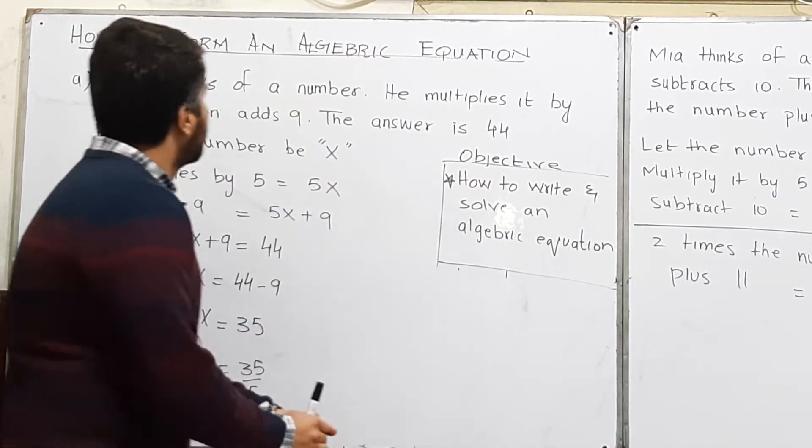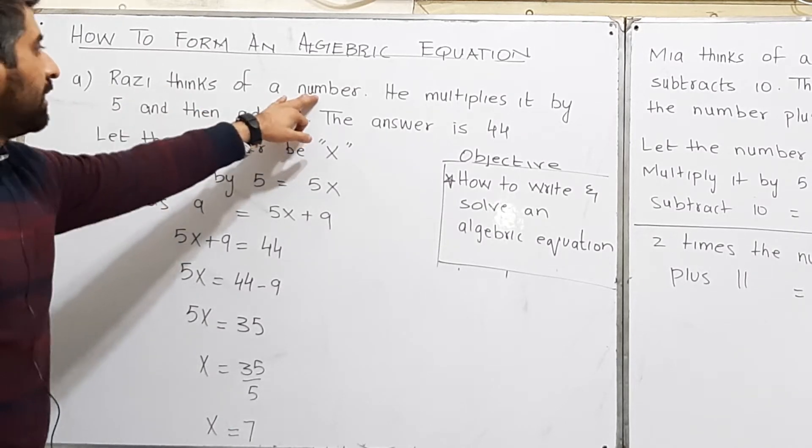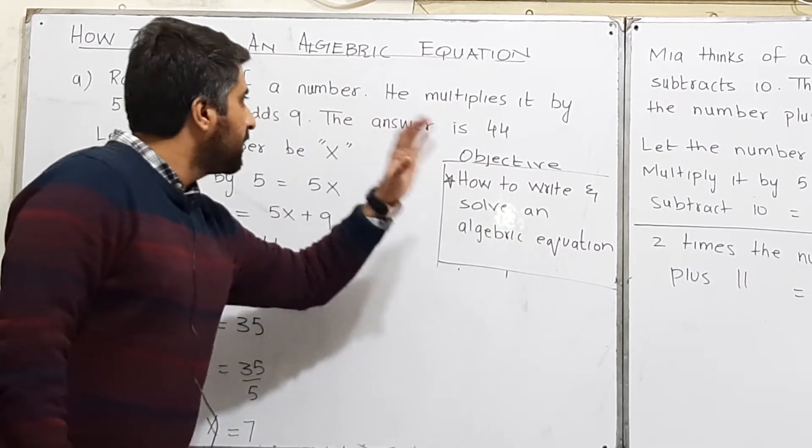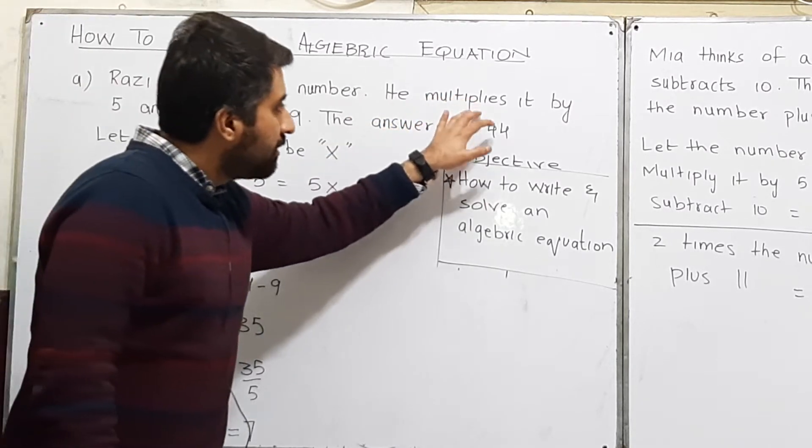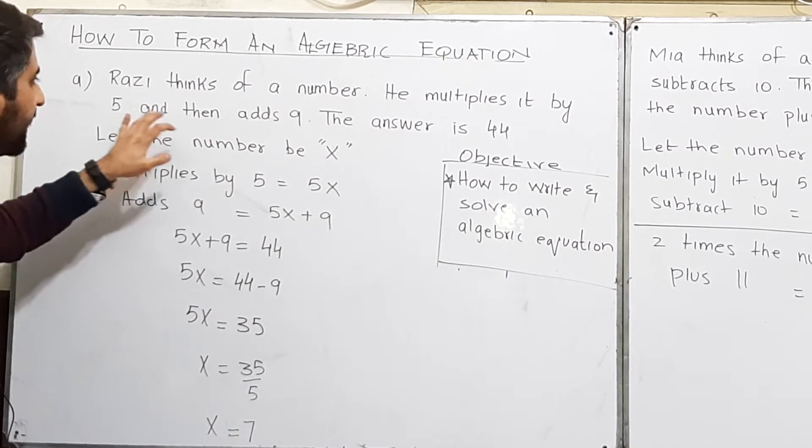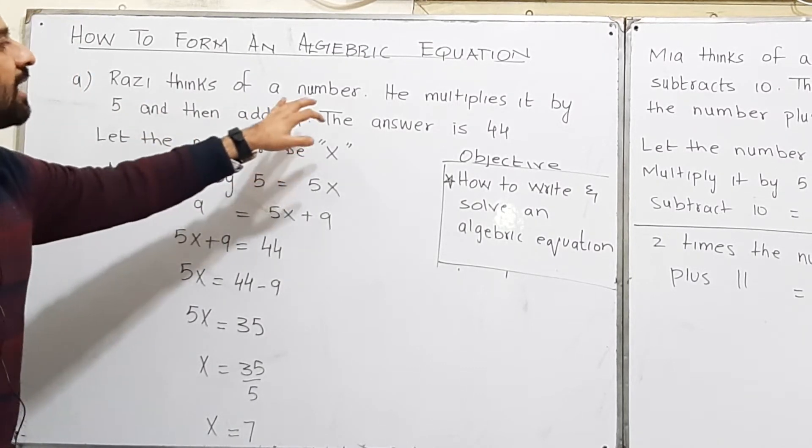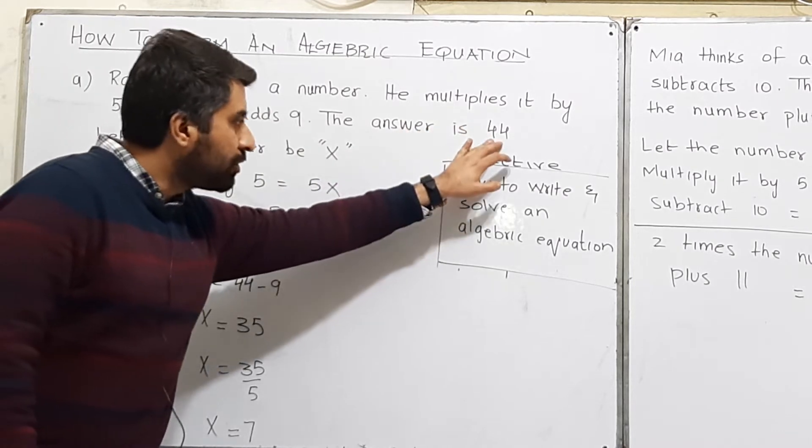Let's start an example. Raji thinks of a number. He doesn't know about, he just thinks of a number. He multiplies it by 5 and then adds 9. The answer is 44.